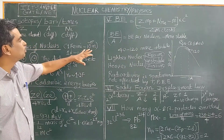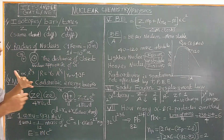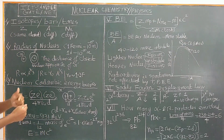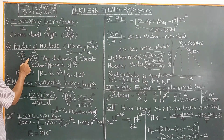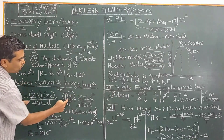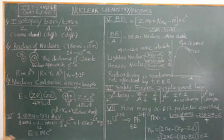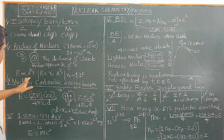The nucleus is about 10⁵ times smaller than the atom. The radius of the nucleus is determined by the distance of closest approach of the alpha particle to the nucleus. When the alpha particle approaches, it can only come up to a certain distance — that closest distance of approach gives the measure of the radius of the nucleus.